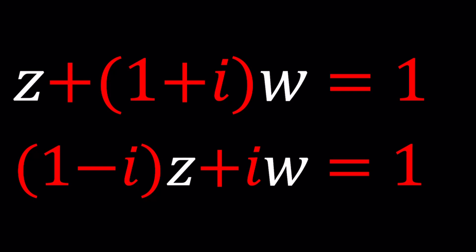This is sort of like a linear system of equations, so we can use those same methods. You could also replace Z with A plus BI — which is the name of this channel, by the way — and W with C plus DI, and then solve for A, B, C, D, but that would be really, really painful. We can call that the first method and just proceed with the second method.